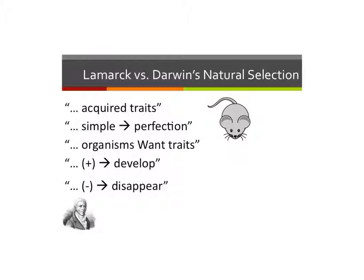The last part of Lamarck's theory stated that if you use a trait it'll end up developing, and if you don't use it it'll disappear — so if a mouse doesn't use its tail, its offspring will be born without tails. But you and I know very well that this isn't what happens.